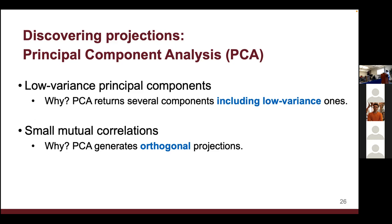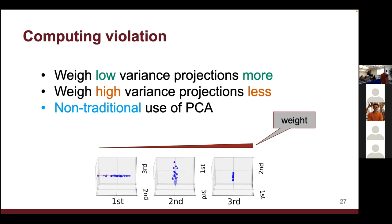Among low-variance components there can be variation — very low variance versus medium-low. So when computing violations, we weight low-variance violations more and high-variance violations less. If you violate a strict constraint, that's a large violation; violating a more relaxed constraint is weighted less. This violation measure captures how far a tuple is from the training data, and we should be cautious about predictions on such tuples.